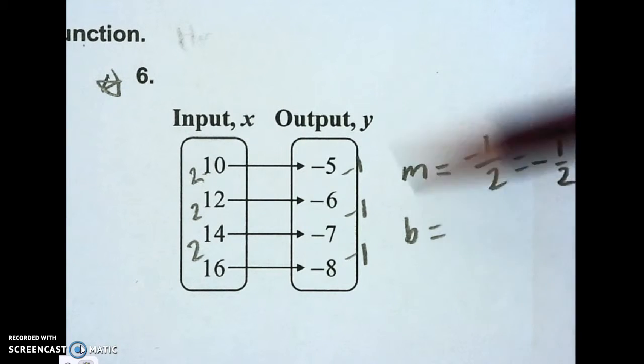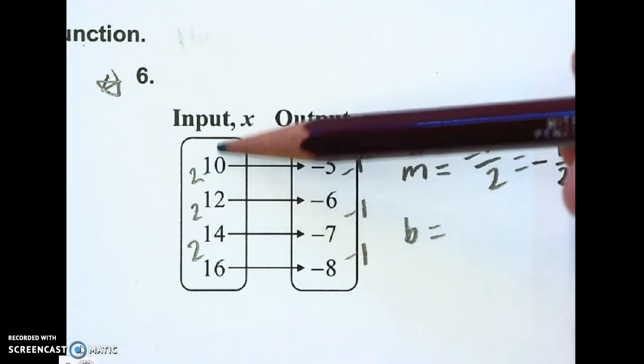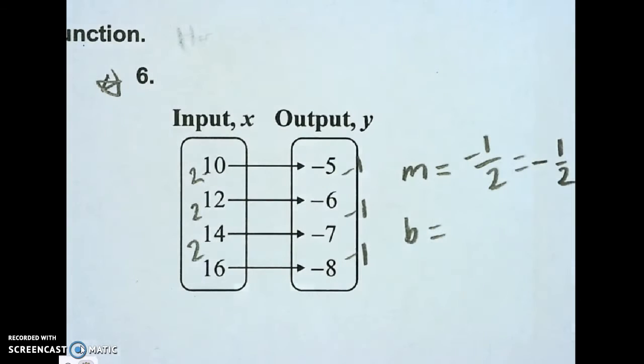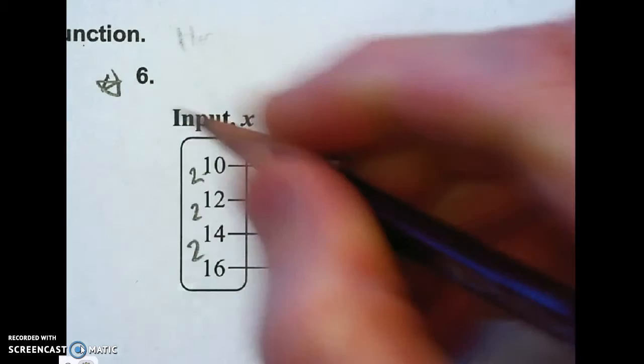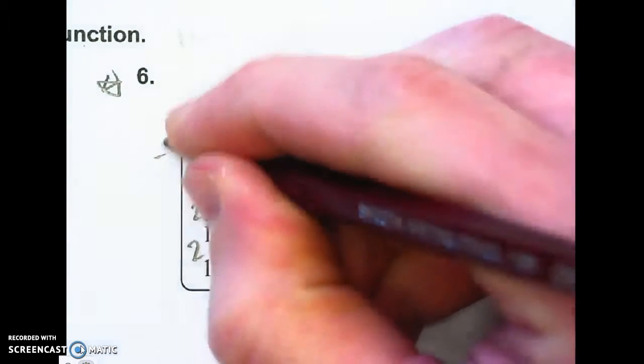Now I need to find my b. I am right here at 10. I need to go back 10 spaces to get to 0, I need to know where 0 is. So going back 10 spaces, that's minus 10.